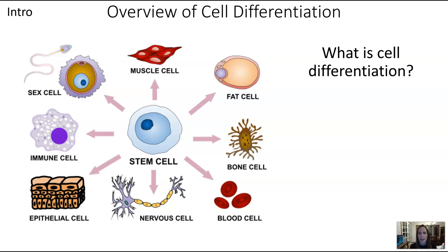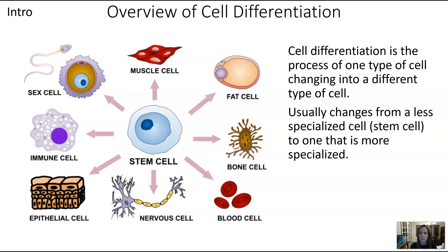To put this in context of why it matters: there are lots of different cells in multicellular organisms. An important concept here is cell differentiation — the process of one type of cell changing into a different type of cell. Usually that means a change from a less specialized cell, like a stem cell, to one that is more specialized.